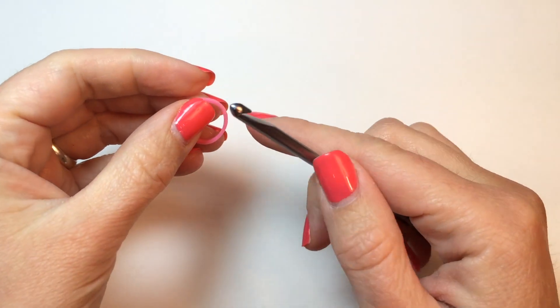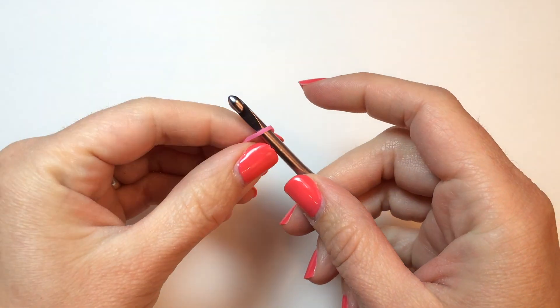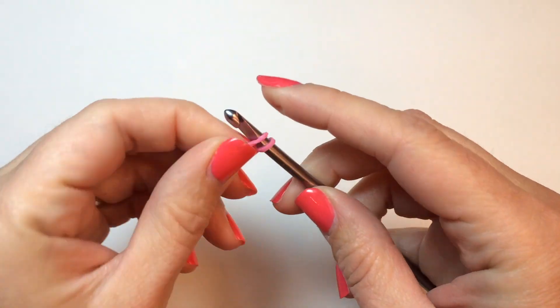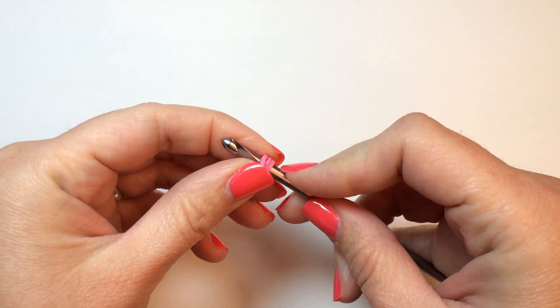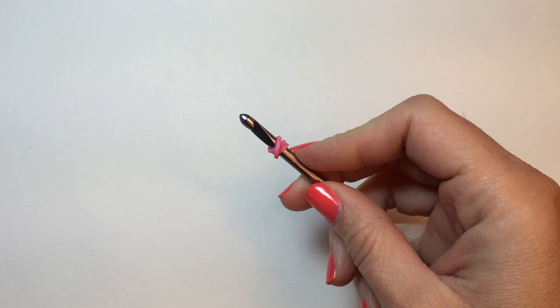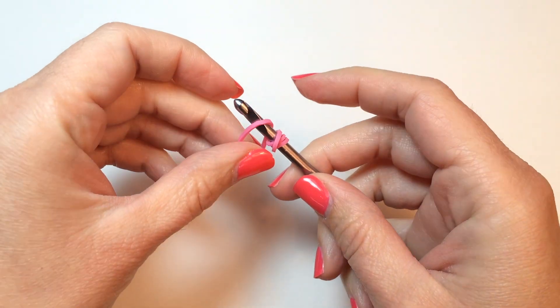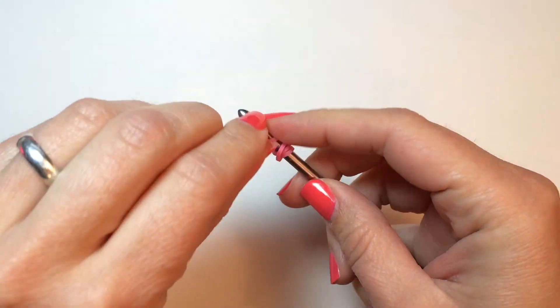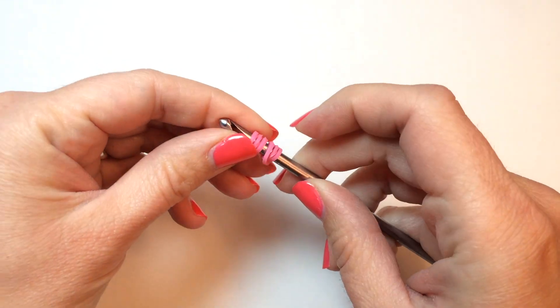Take a rubber band in the color you want the flower to be, and wrap it around your hook three times. Then, take the second rubber band that is that same color for the flower, and wrap that one around your hook three times as well.